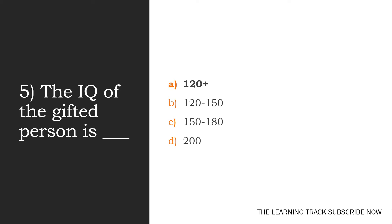Fifth question: The IQ of a gifted person is dash. The options are 120 plus, 120 to 150, 150 to 180, 200. A gifted person has a higher IQ range.